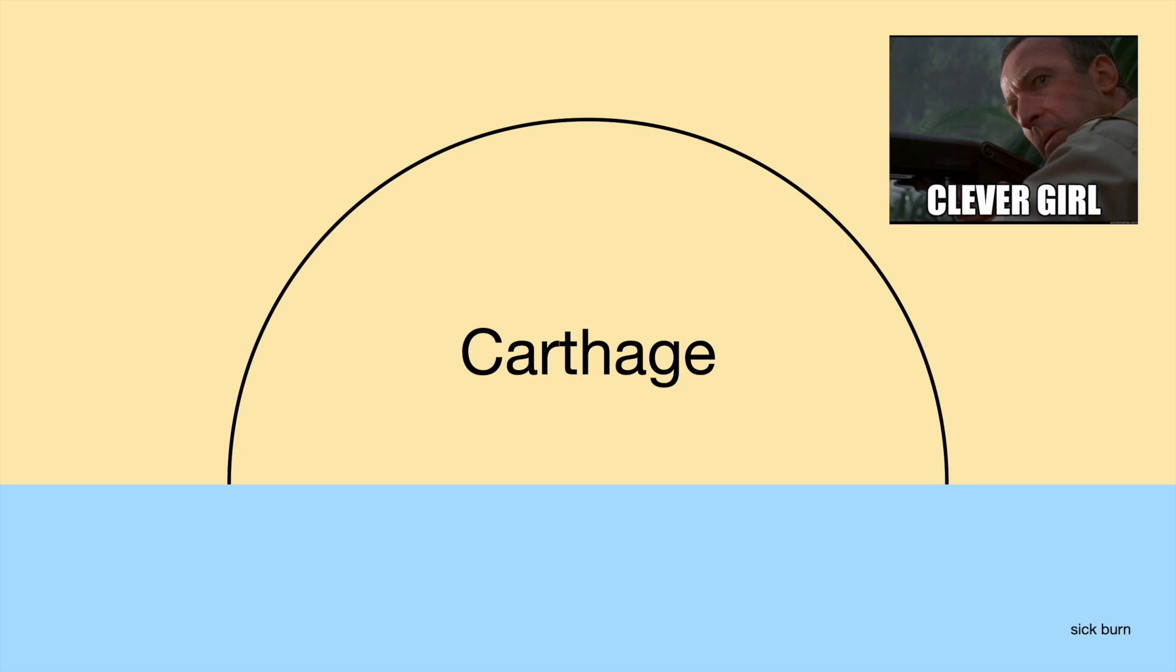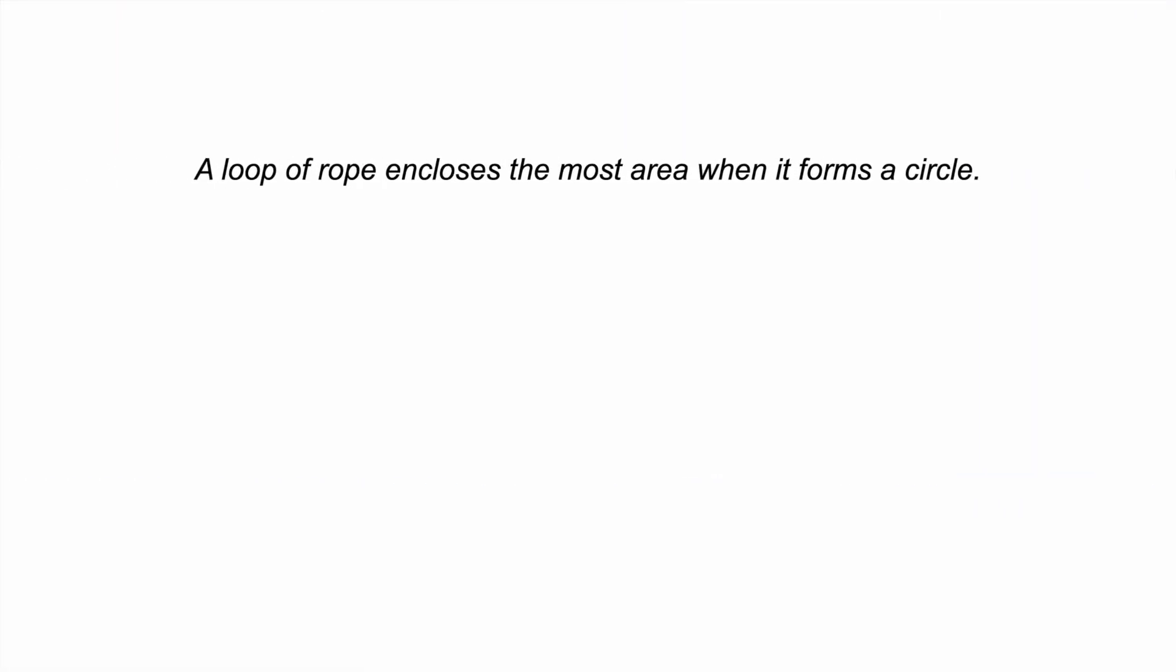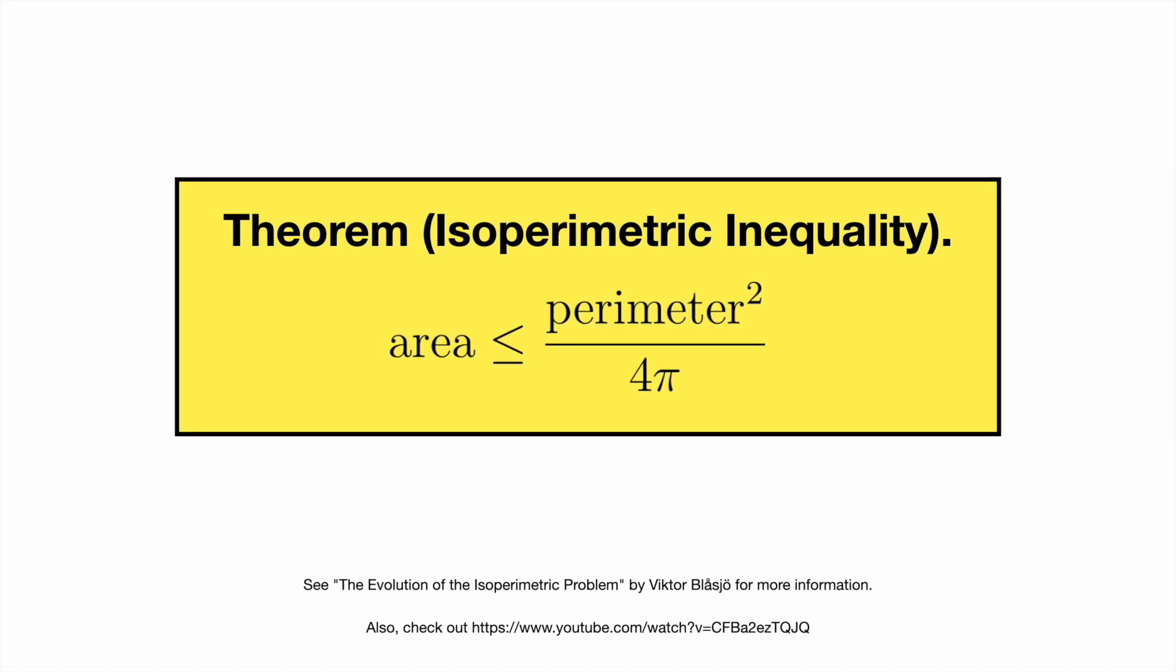There's a mathematical principle at play in this story, and it corresponds to the intuition that a loop of rope encloses the most area when it forms a circle. To derive this principle, we relate the area of a circle to its perimeter. The right-hand side is the largest possible area for a shape of a given perimeter, and this fact is known as the isoperimetric inequality.